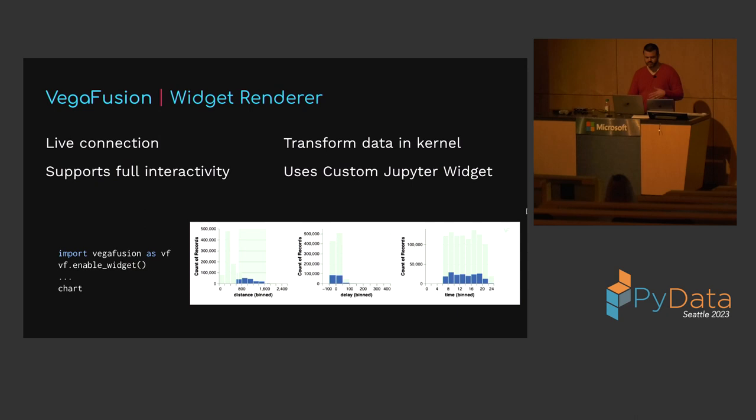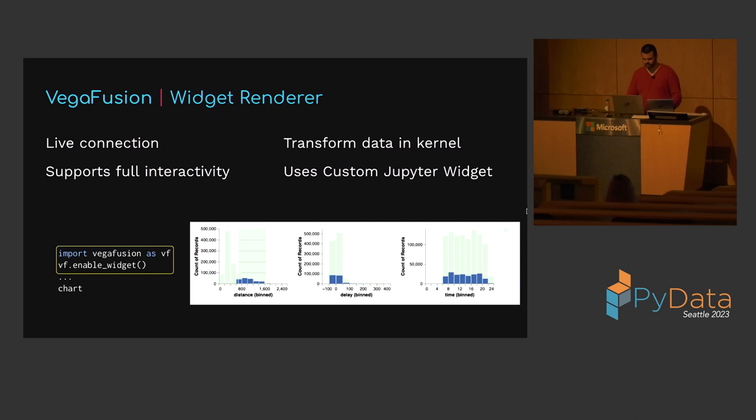The VegaFusion widget renderer maintains a live connection between the kernel and the browser and transforms data in response to selections, providing full support for interactivity. To enable this live connection, the widget renderer relies on a custom Jupyter widget extension, so unlike the MIME renderer, it's only compatible with compute environments that support third-party Jupyter widgets. To enable it, import VegaFusion and call the enable_widget function, then create and display the chart as usual.